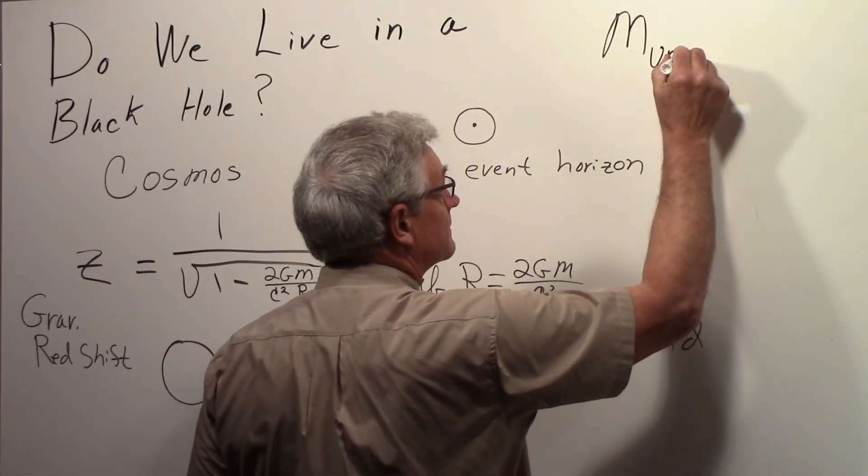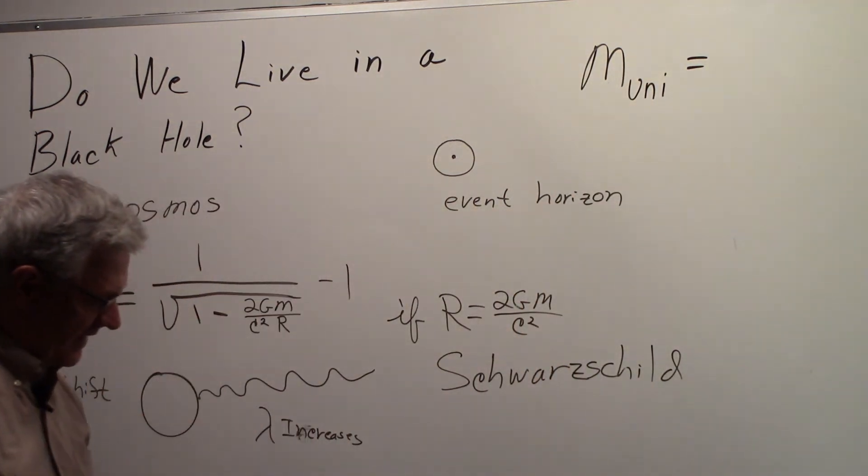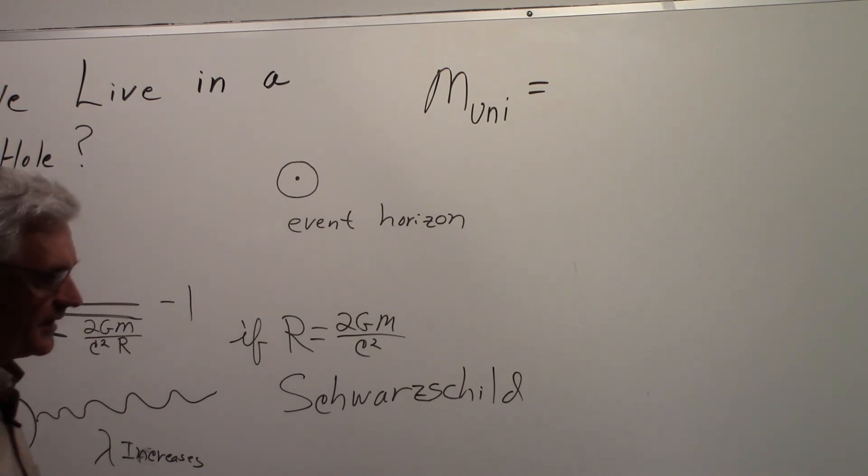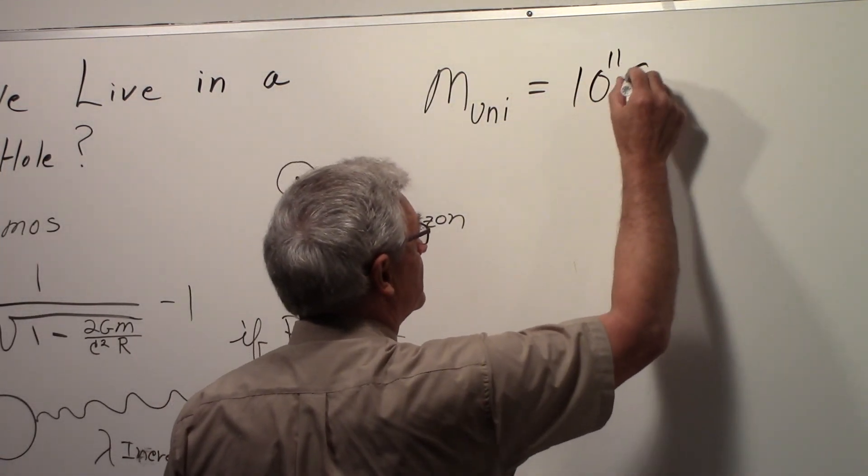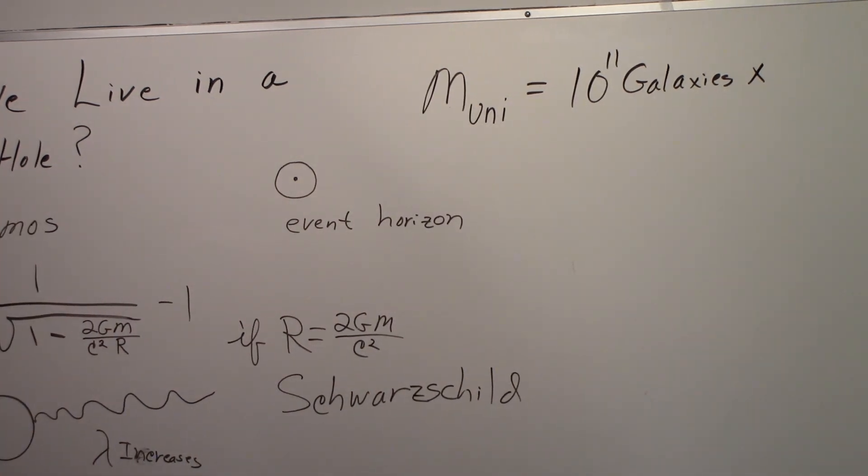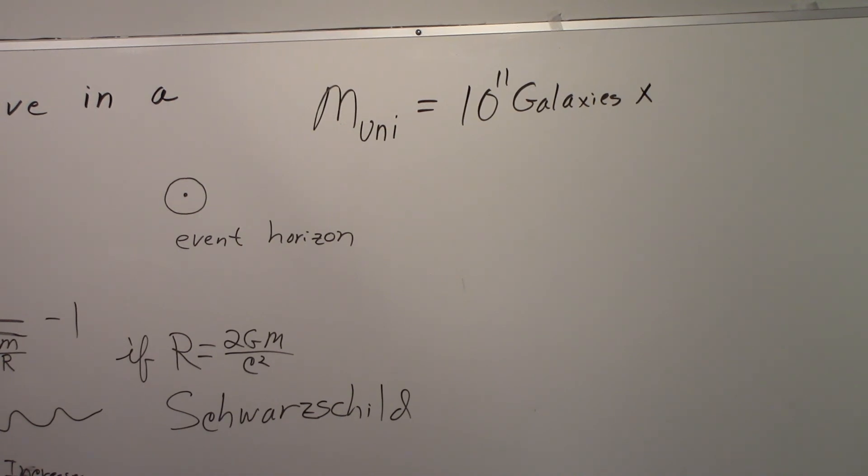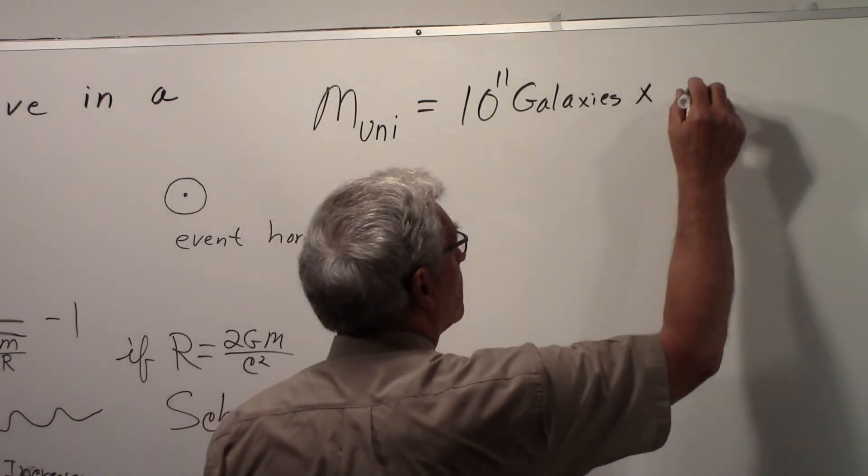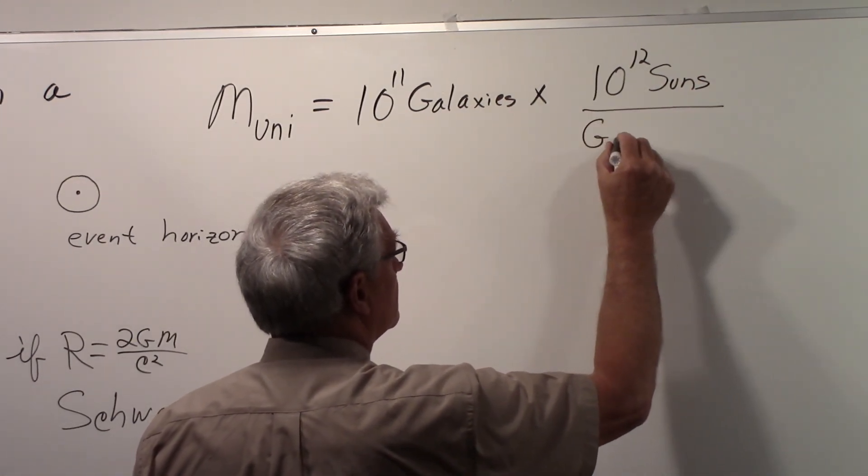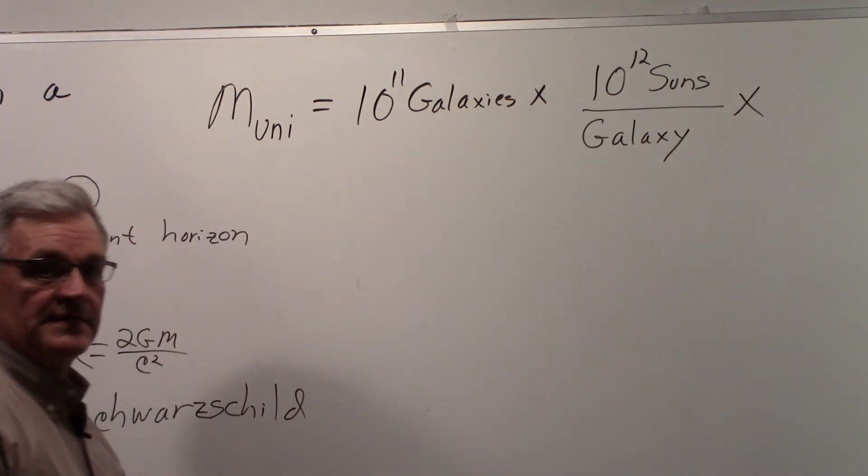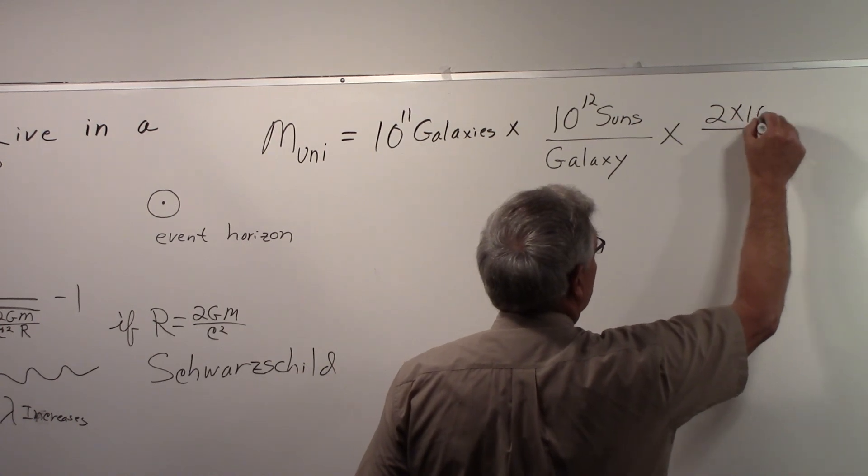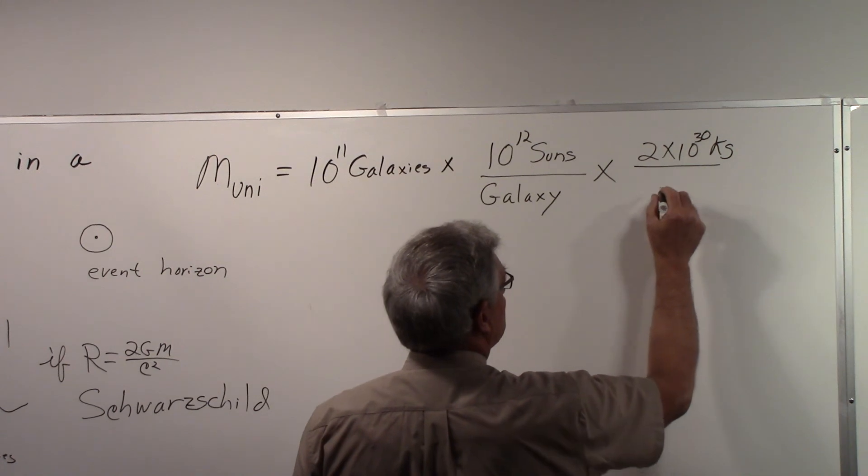We can, roughly, very roughly speaking. So how could we estimate the mass of the universe? What could we say that's equal to? Well, the general view is that there's a hundred billion galaxies in the universe that we can see—a hundred billion galaxies, that's 10 to the 11th galaxies. And in each galaxy, if you take the Milky Way as a typical case, there's a mass of approximately 10 to the 12th suns, so we have 10 to the 12th suns per galaxy. And then what's the mass of the sun? Two times 10 to the 30th kilograms.